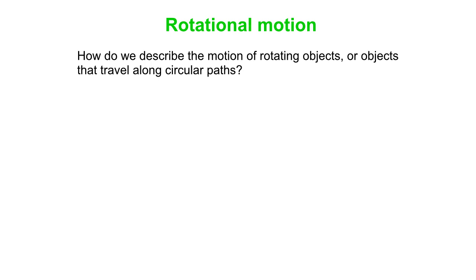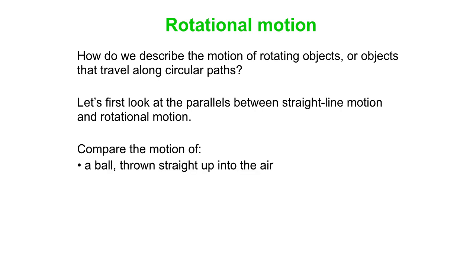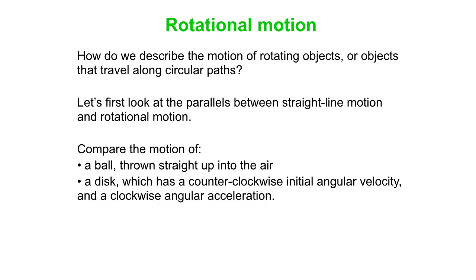How do we describe the motion of rotating objects — objects that travel along circular paths? Let's first look at the parallels between straight-line motion and rotational motion. Compare the motion of a ball thrown straight up into the air and a disc which has a counterclockwise initial angular velocity and a clockwise angular acceleration — similar to the ball which has an initial velocity opposite in direction to its acceleration.